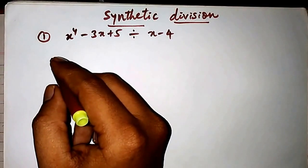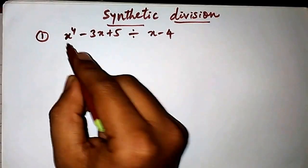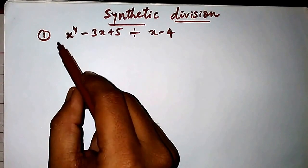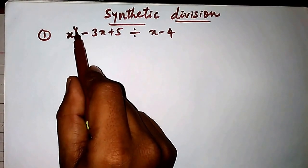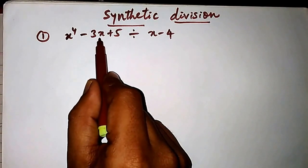First step is take the equation x raised to 4 minus 3x plus 5 and write down its coefficients. You can see here after power 4 there is no power that is cube and square, directly it is coming as x.